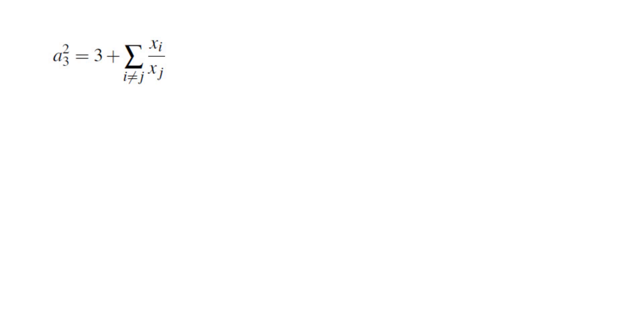And the rest of the sum becomes xi over xj when i is not equal to j. There are 3 possibilities for i and 2 possibilities for j. So there are 6 terms here. And if you apply AM-GM to these 6 terms we would get 3 plus 6, 6 root of product of xi over xj where i is not equal to j. But this product is 1 because when you have xi over xj somewhere you also have xj over xi somewhere else. So the sum becomes 3 plus 6 which is 9 which means a3 is at least 3.